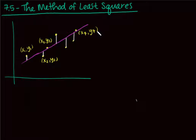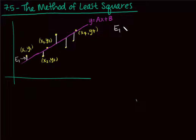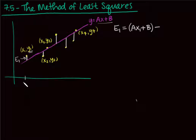The reason we call it e is because it is the error between the line — which I'll call y equals ax plus b — and the actual data. So the error e sub 1 is the distance between what the line gives me at x1 and the actual y value of that point. It's just the difference between my y values.